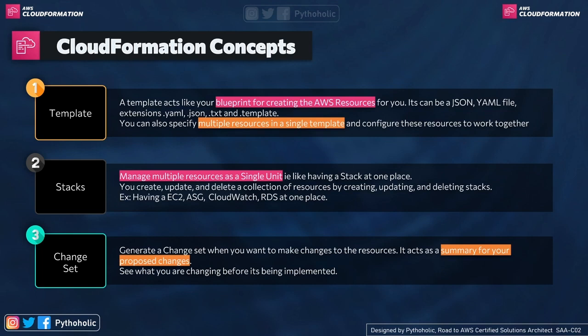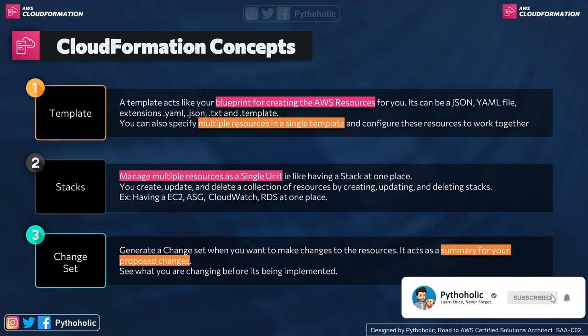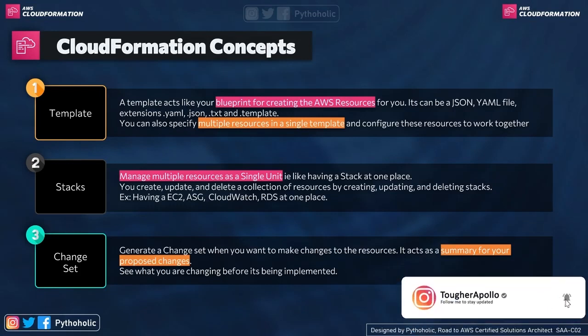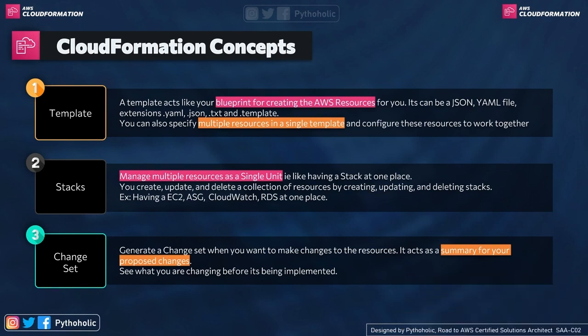The second concept is Stack. Imagine a burger — it has layers like a patty, lettuce, and cheese. In cloud terms, your resources like EC2, IAM, CloudWatch, STS, and RDS databases form your technology or service stack, which makes up your application design. You manage multiple resources as a single unit. You create, update, and delete a collection of resources by creating, updating, and deleting stacks — not one, but multiple resources at once, such as an EC2 auto-scaling group, CloudWatch, and RDS all at one place.